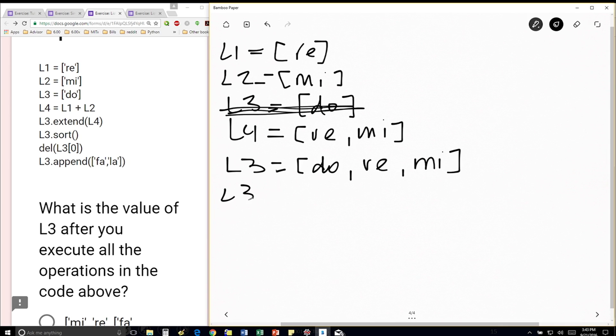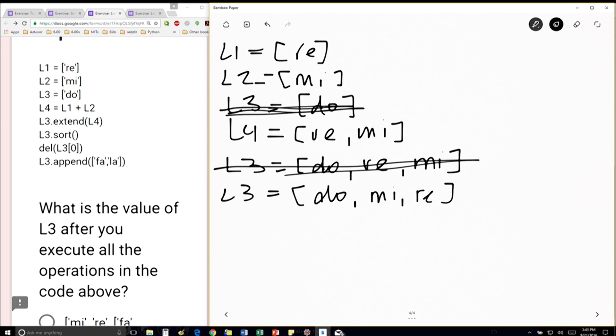L3.sort is going to sort alphabetically. So that's Doe, Mi, Ray. And sort also mutates the list. So the old version of the list I have is gone.